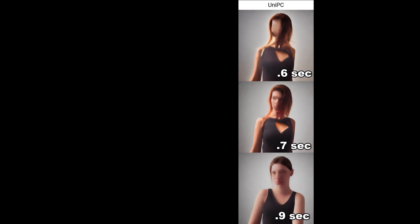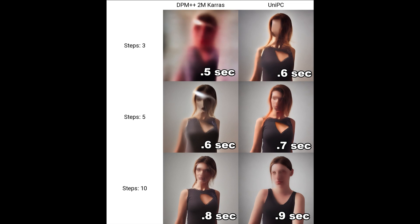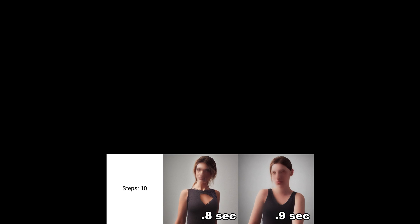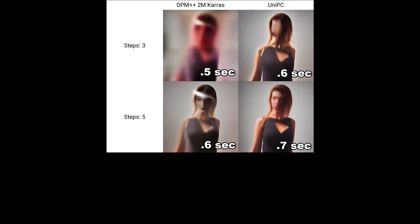UniPC has higher quality at lower steps, which is good for the blocking out step. DPM++ 2M Karras is a bit faster and has better quality at higher steps for the detailing and refining steps, but okay results at low steps.